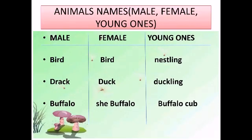Next we have bird — young: nestling. Next is duck — female: duck, young: duckling. Next is buffalo — female: cow, young: calf.